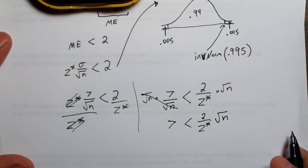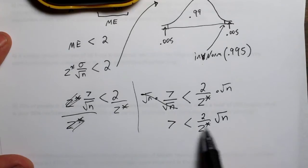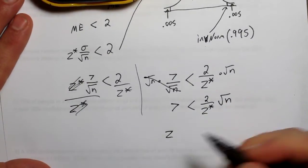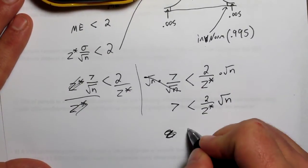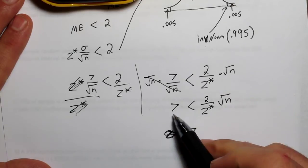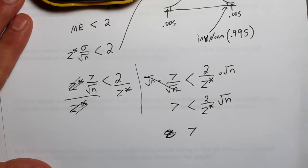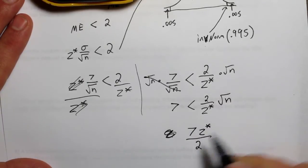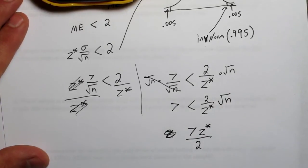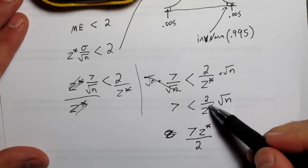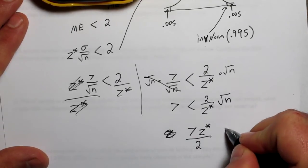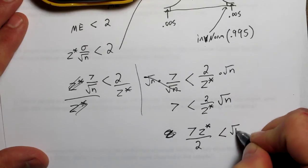So if I divide 7 by 2 divided by z star, I'll be left with the square root of n on this side. 7 divided by... Remember, when you divide by a fraction, it's the same as multiplying by the reciprocal. I'm actually going to change this to that: 7 z star over 2. That's just the reciprocal of this fraction multiplied by the 7.